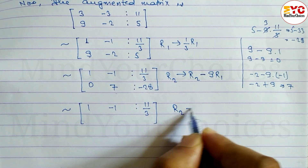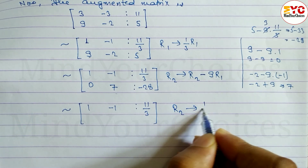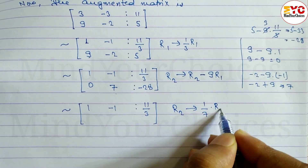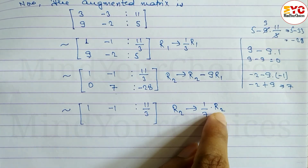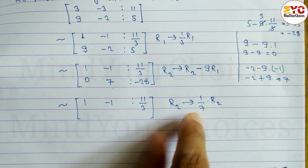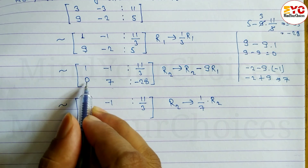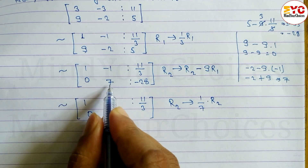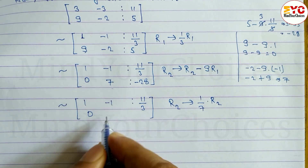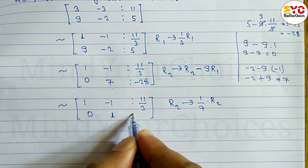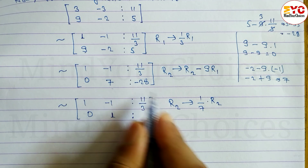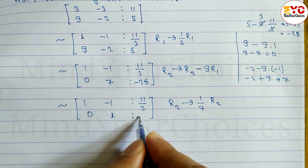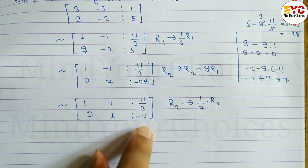Now we apply R2 tends to 1/7 times R2 to make the 7 into 1. Dividing each entry by 7: 0 divided by 7 is 0, 7 divided by 7 is 1, and minus 28 divided by 7 is minus 4. So R2 becomes: 0, 1, minus 4.